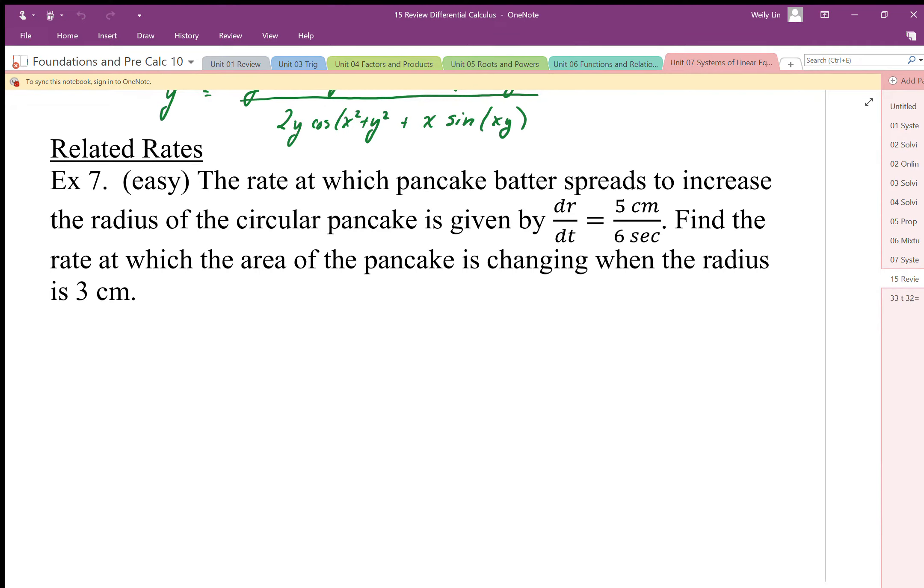Here we have a related rate problem, and this tends to be an easier one because we can figure out the relationship equation quite easily. It says here the rate at which pancake batter spreads to increase the radius of a circular pancake...